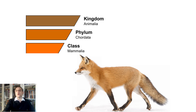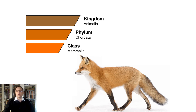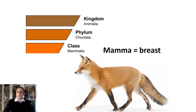From phylum, we go to an even more specific group or taxon called class. Foxes belong to class Mammalia. This class includes all animals that have three middle ear bones, hair or fur, and produce milk by modified sweat glands called mammary glands. In Latin, mamma means breast.